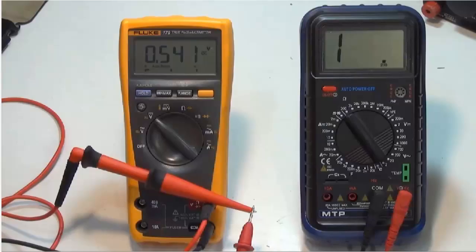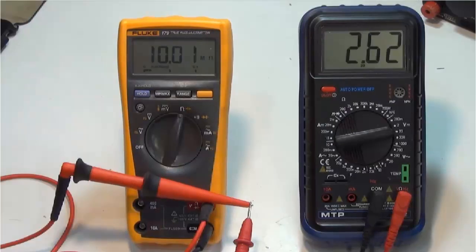To summarize, whenever making a resistance measurement, make sure that the power is turned off in the circuit. In our examples, the MTP meter was producing anywhere from 0.5 volts to almost 3 volts. And the Fluke meter, when set to the 10 mega ohm range, was producing a little over 2.6 volts.